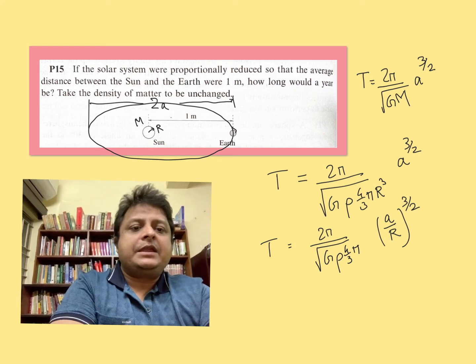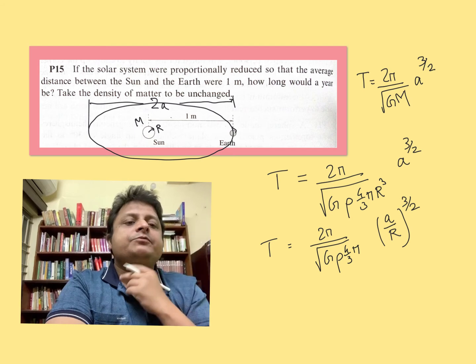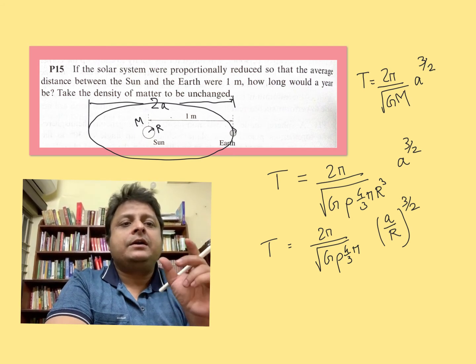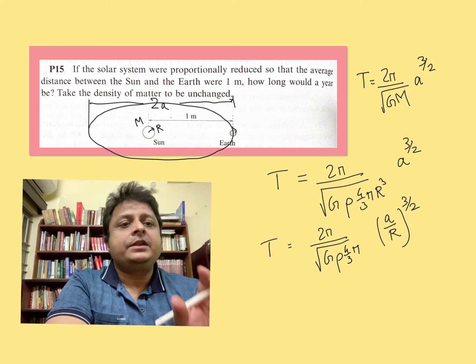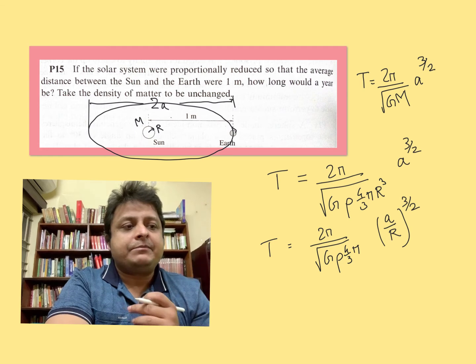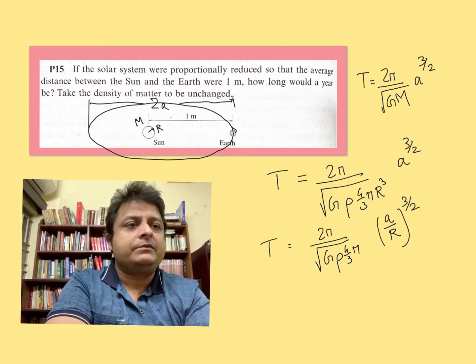Now, everything is proportionately reduced, so a and r are proportionately reduced such that their ratio is constant, and ρ is already the same. So there will be no change in the time period.